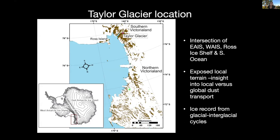To jump right into the research area, we decided to look at Taylor Glacier, shown here with a red circle. It's located in a unique position at the intersection between the East Antarctic ice sheet, the West Antarctic ice sheet, the Southern Ocean, and the Ross ice shelf. It's close to McMurdo, making it a convenient fieldwork site. It's surrounded by a lot of exposed local terrain — the brown areas here are mountains not covered by ice — so there's potential to probe both regional and global variations in dust.